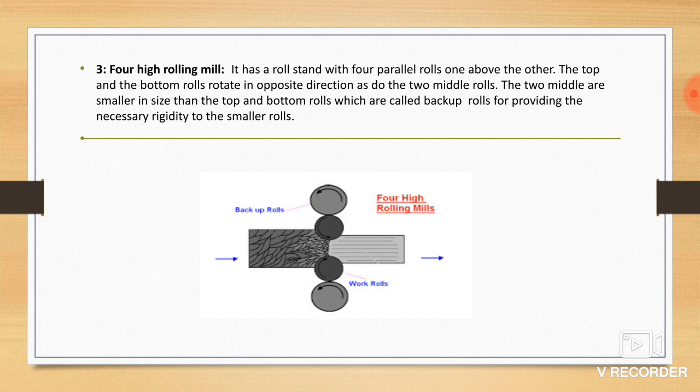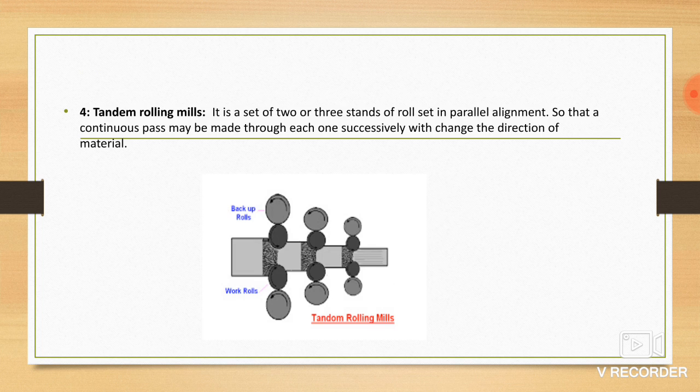Four high rolling mill: It has a roll stand with four parallel rolls, one above the other. The top and bottom rolls rotate in opposite directions, as do the two middle rolls. This is the diagram of four high rolling mill.